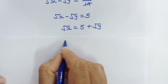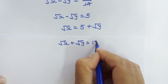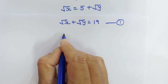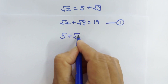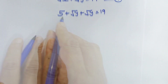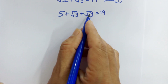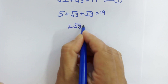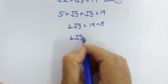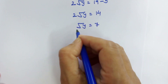Let's recall equation number 1: √x plus √y equals 19. Let's substitute the value of √x. So 5 plus √y plus √y... wait — 5 plus √y is equal to 19. Moving 5 to the right hand side: 2√y equals 19 minus 5, so 2√y equals 14, giving us √y equals 7.